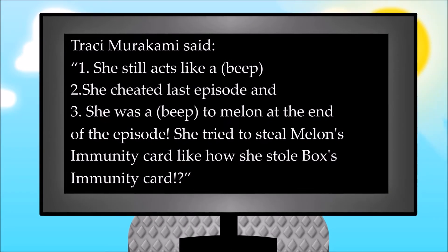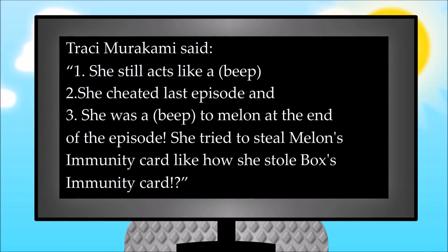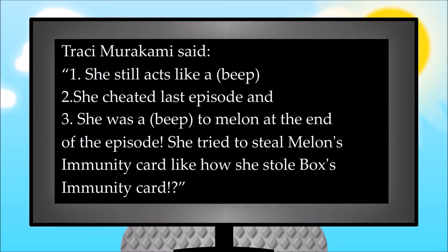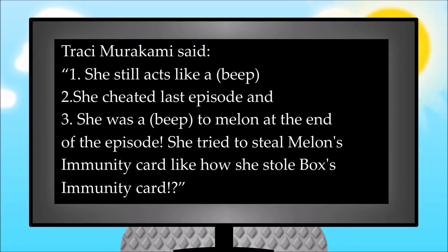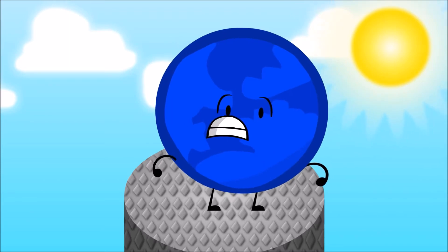Traction Rakimi said 1. She still acts like a bee. 2. She cheated last episode 149. She was a thief, took down one at the end of the episode.